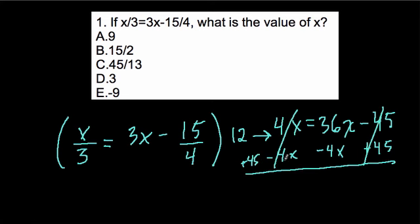These cancel out, these cancel out. 36x minus 4x is 32x, and that's going to be equal to 45.